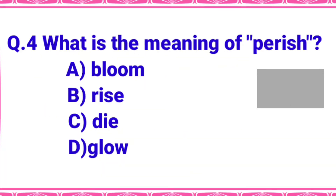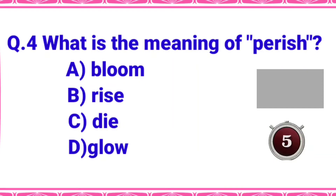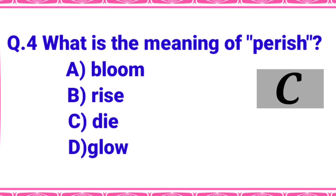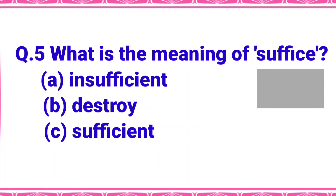What is the meaning of 'perish'? Option A: bloom, B: rise, C: die, or D: glow. Your time starts now. The right answer is option C - die.